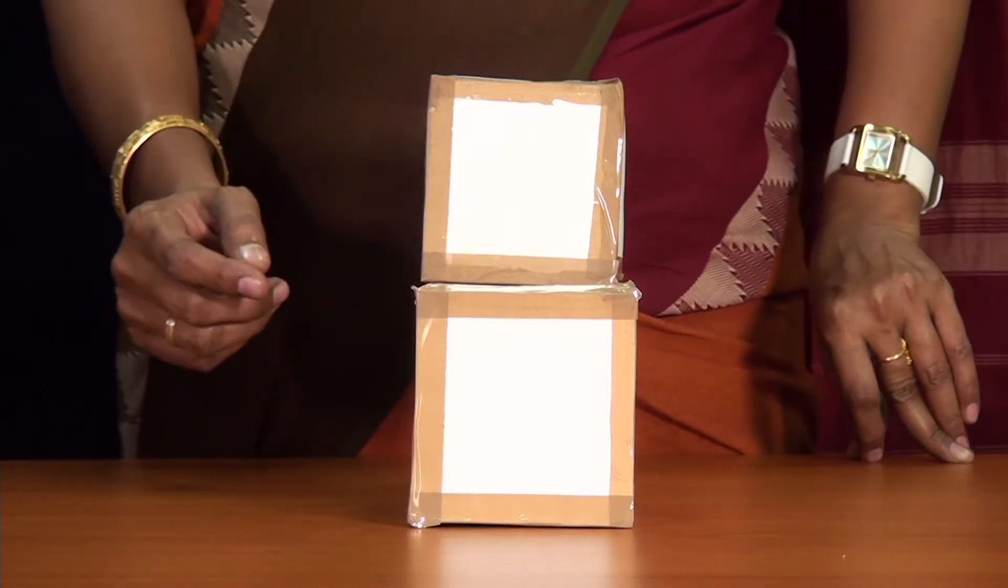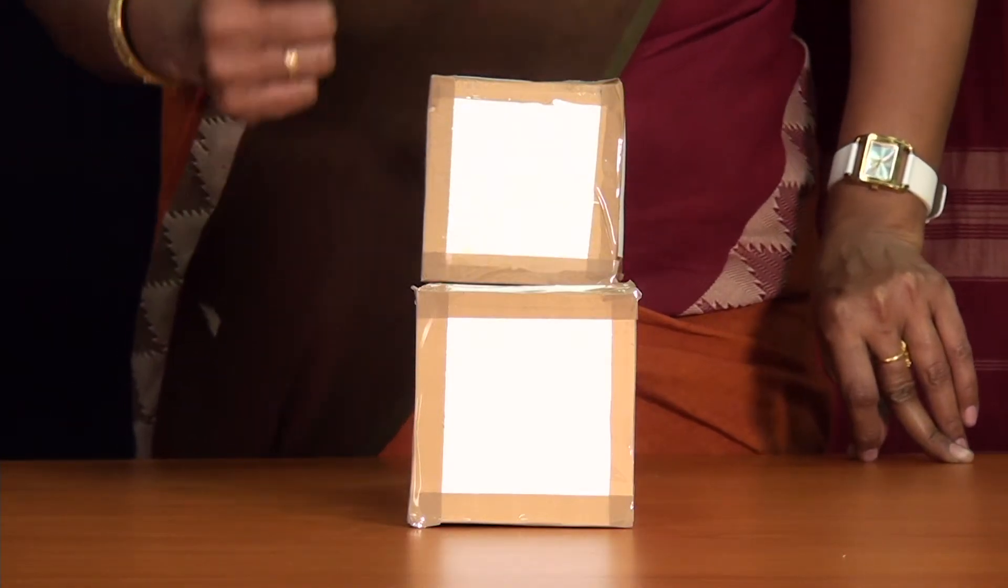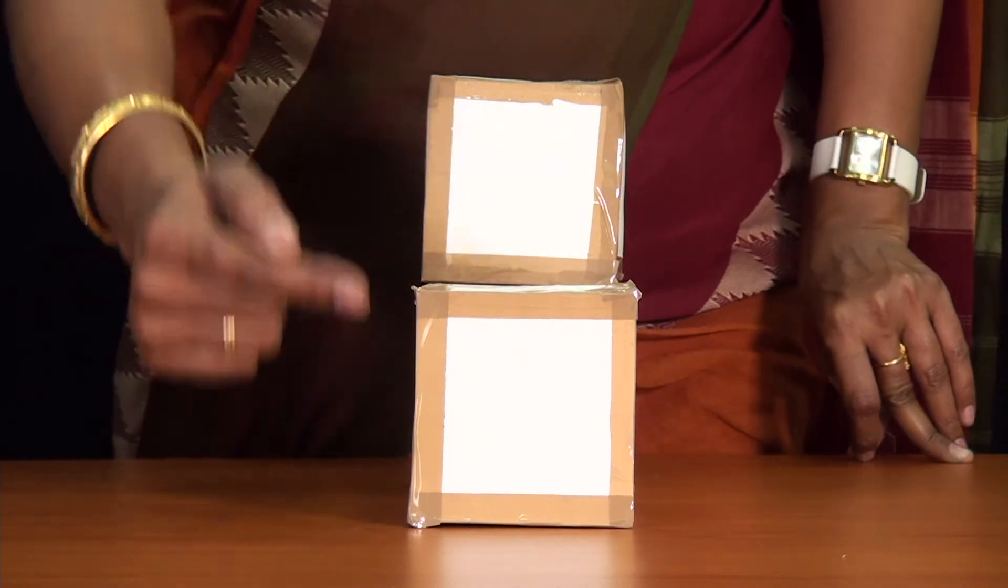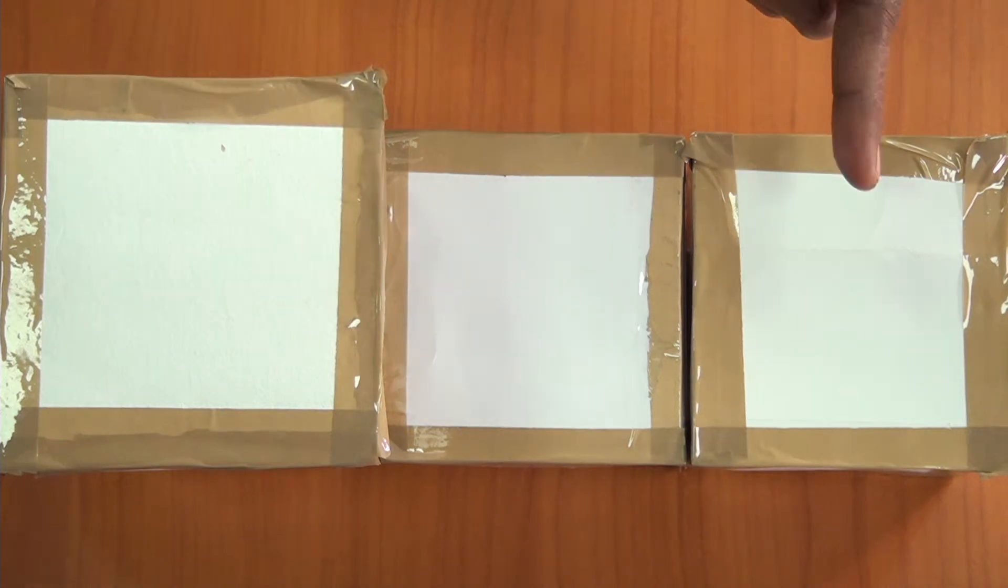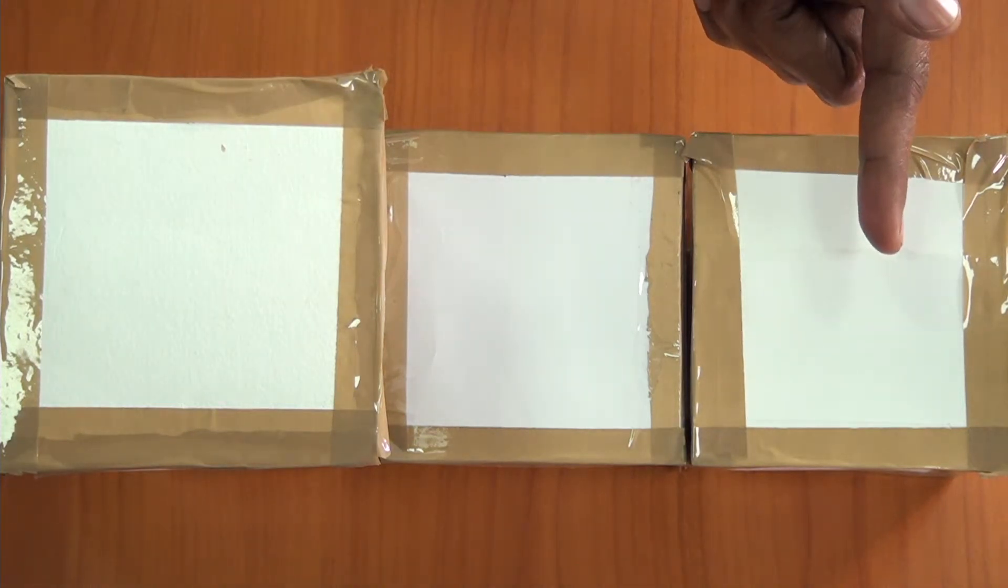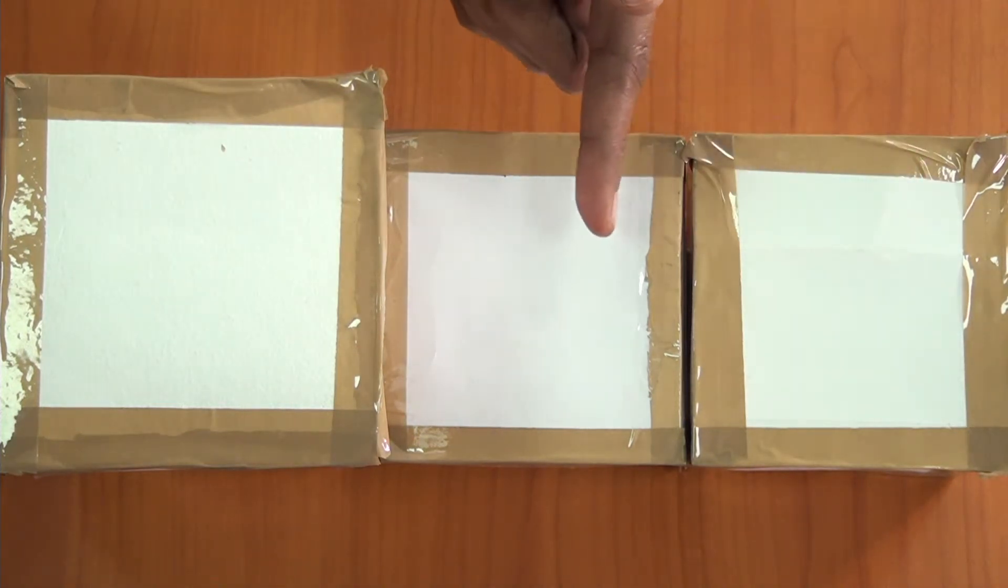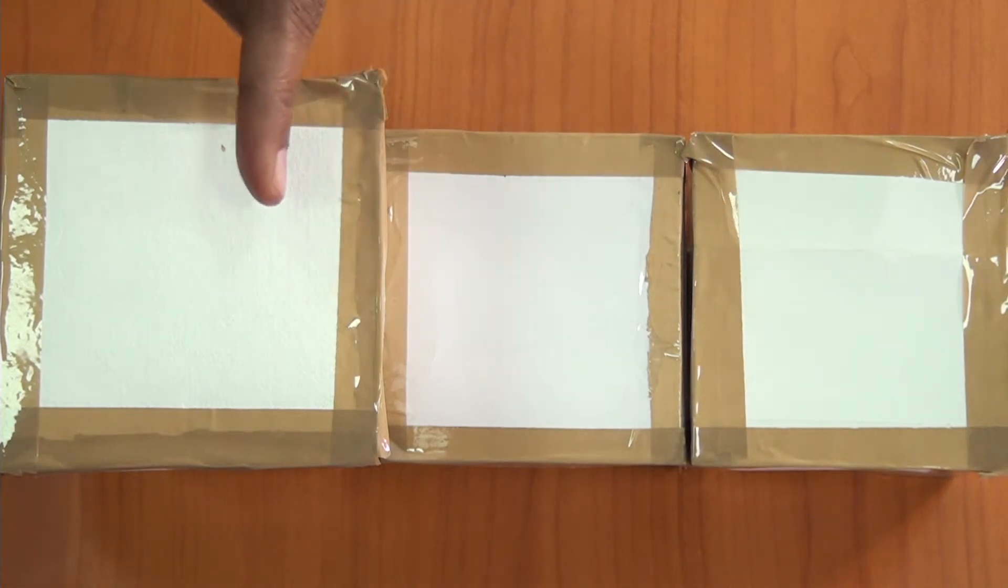Moving on to the side view. This is the side view of the object showing just 2 squares. Next, the top view - what do we see when we look at it from the top? Yes, we can see 3 squares from the top.